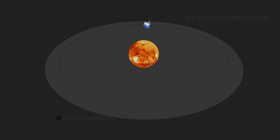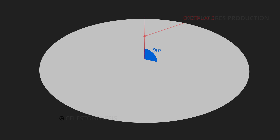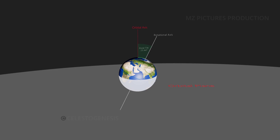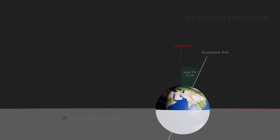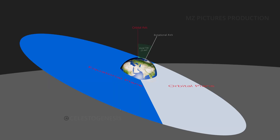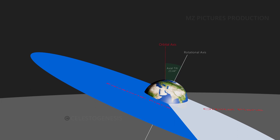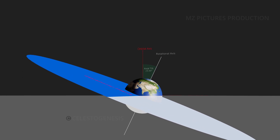The ecliptic plane, or orbital plane, is the geometric plane in which an orbit lies. The orbital axis is the line perpendicular to its orbital plane. In astronomy, axial tilt, also known as obliquity, is the angle between an object's rotational axis and its orbital axis — equivalently, the angle between its equatorial plane and orbital plane. The Earth's obliquity or axial tilt is 23.44 degrees.